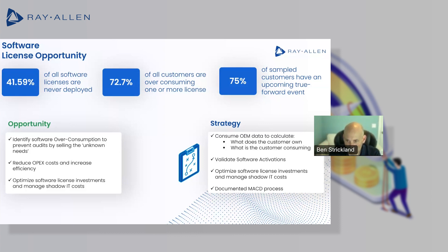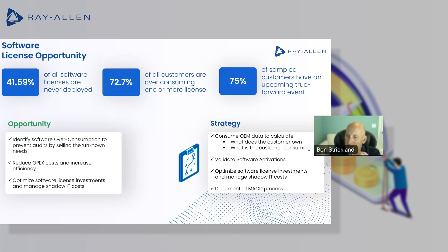What you do to actually accomplish all of this is work with your customer to get access to OEM data on how they're actually consuming these softwares and subscriptions, then use that to validate their activations and bring that information back to the customer. Obviously the customer is not going to want to put themselves into audit risk situations, and this is a way to lower that risk while at the same time finding those revenue opportunities and helping them optimize their software spend.